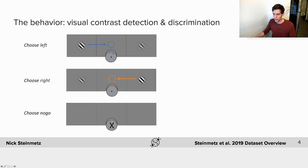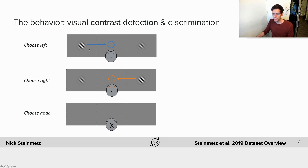Here's what they saw on the screens and what they were supposed to do with the wheel. There were two stimulus locations on the left screen and the right screen — a stimulus could appear on one, the other, both, or neither. If the stimulus was higher contrast on the left, they should turn the wheel clockwise; if higher contrast on the right, counterclockwise. If there was no stimulus, they needed to hold the wheel still for 1.5 seconds to earn a reward. During wheel turning, the visual stimulus was in closed loop with wheel movement.